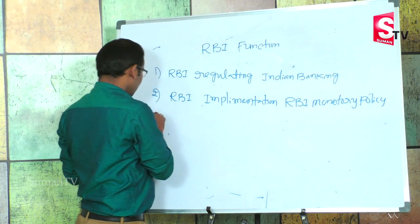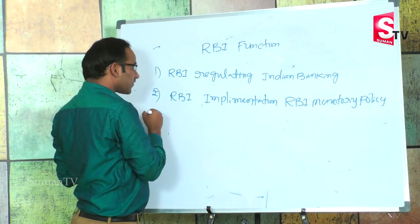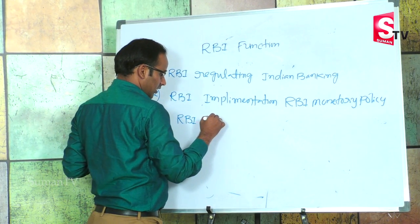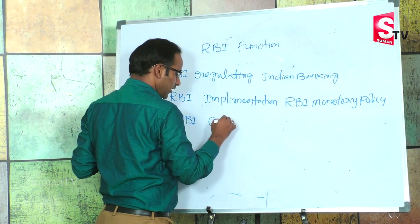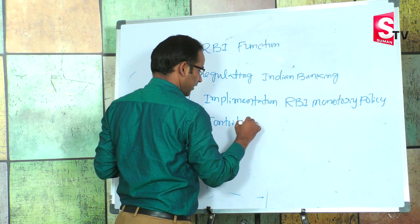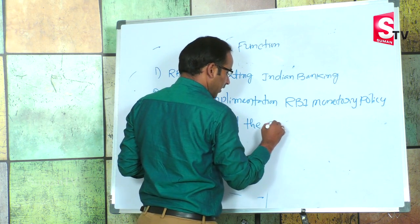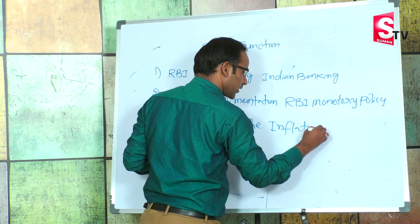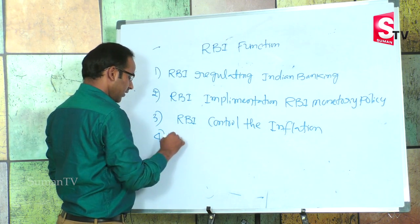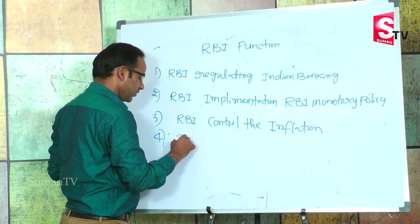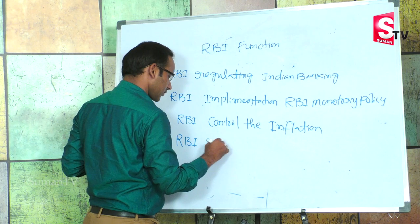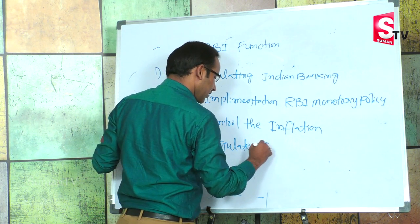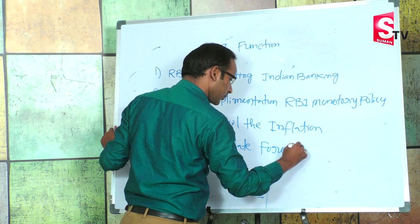The third function of the RBI is that it controls inflation. Inflation is also controlled by the RBI. The fourth function is that RBI regulates the forex market.